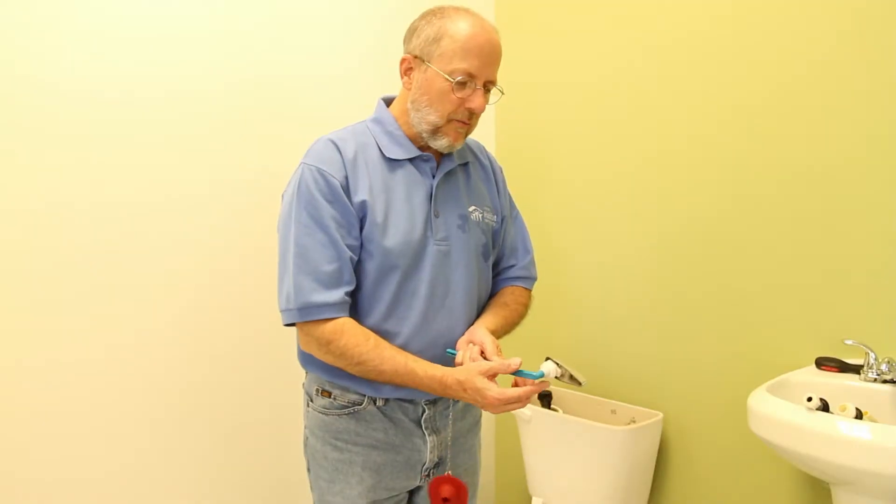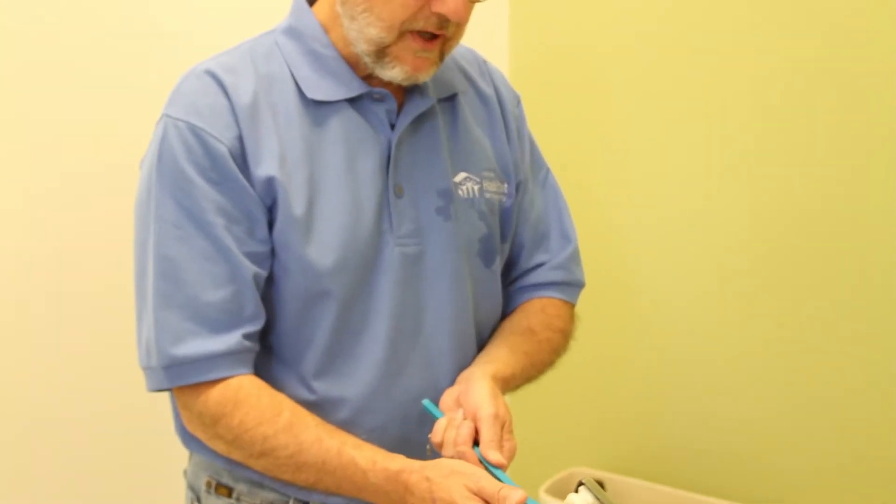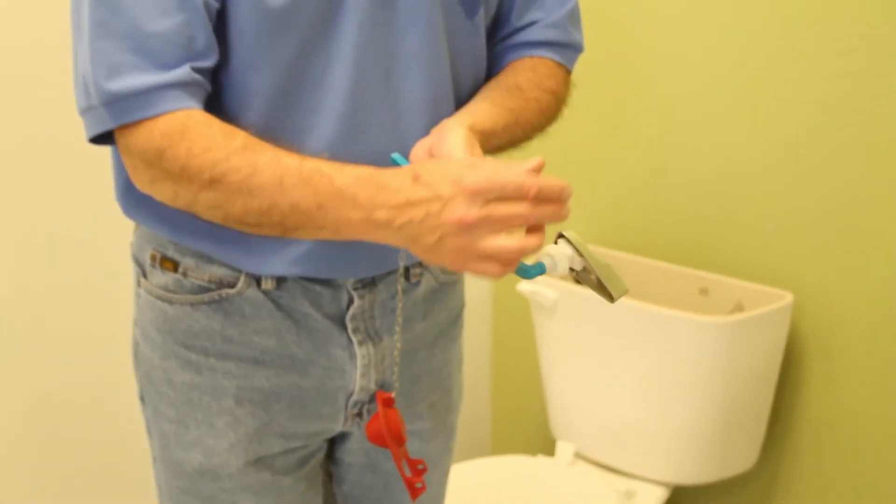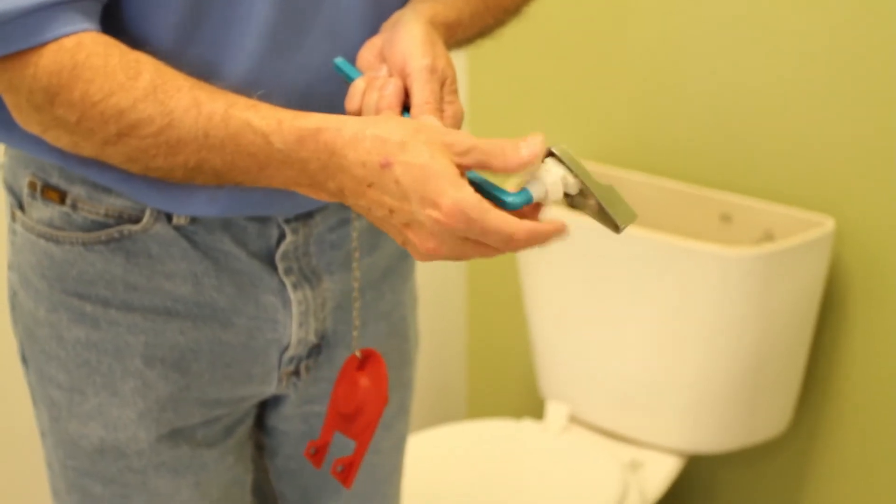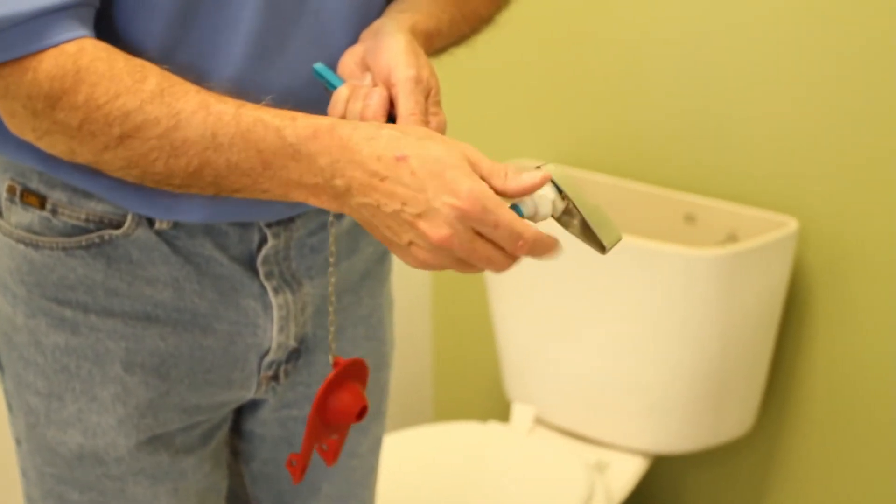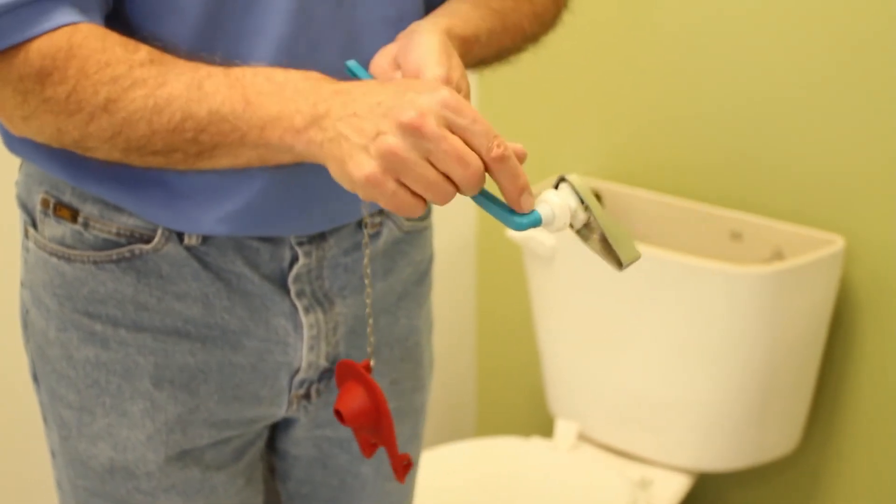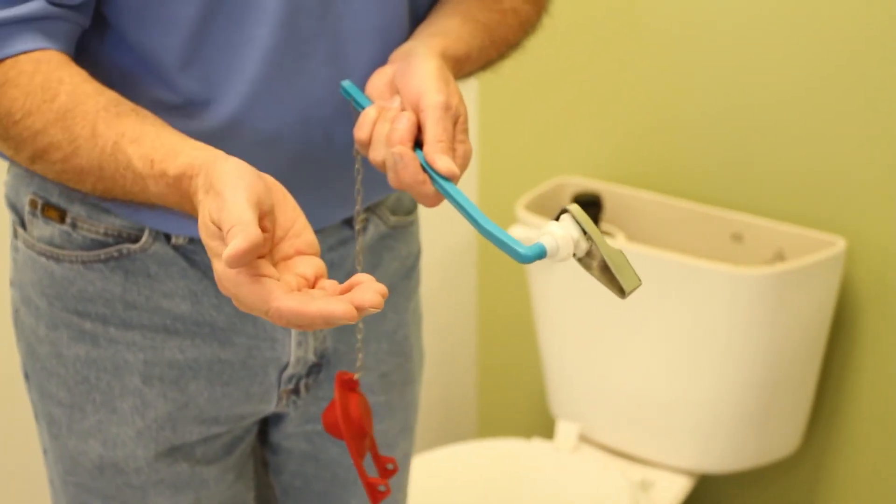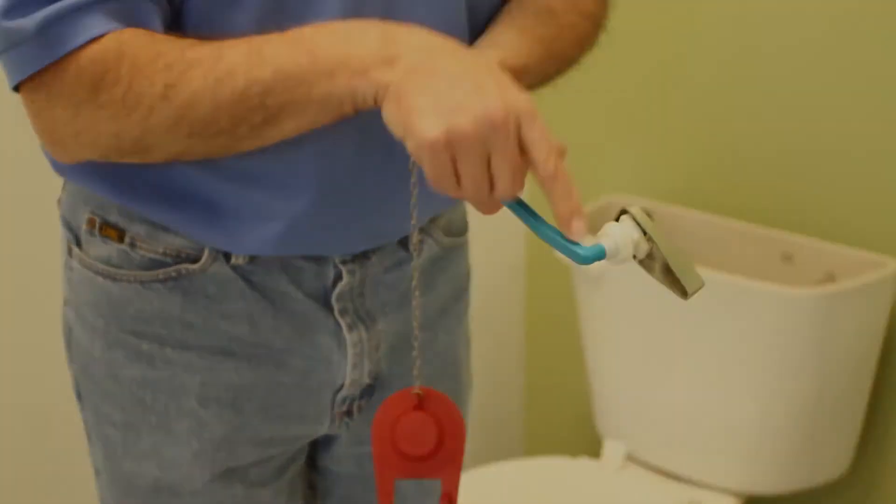As you may recall, when you want to tighten something, normally you twist it to the right. This particular handle is threaded backwards. When you want to tighten this one, you twist it to the left, and when you do it to the right, it makes it looser. So this is backwards threaded—usually it's righty tighty, lefty loosey, but this is backwards.